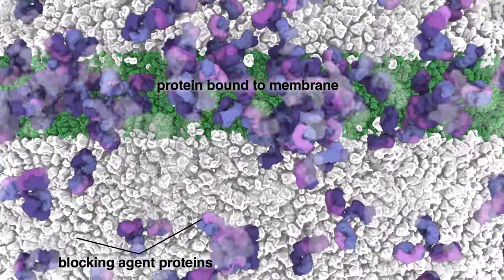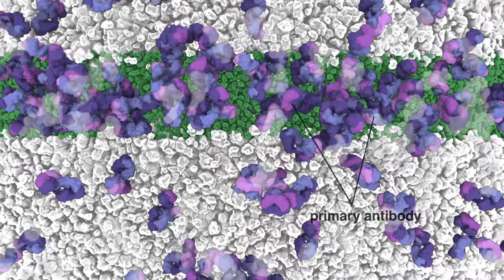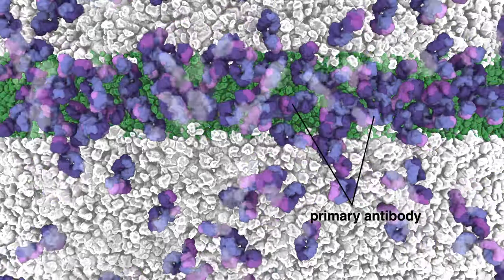After blocking, the membrane is then incubated in a solution containing blocking solution and the primary antibody that specifically recognizes the protein of interest.